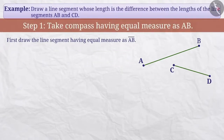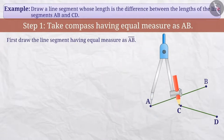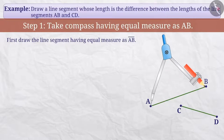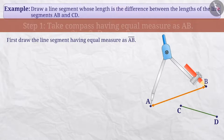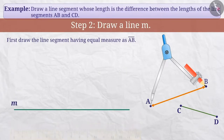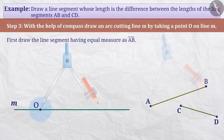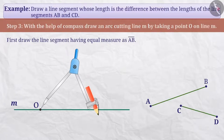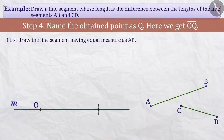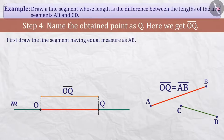Step 1: We will place the pointed end of the compass on point A and opening the compass, place the pencil on point B — that is, we will take the measure equal to line segment AB on the ends of the compass. Step 2: Then we will draw a line and name it M. Step 3: On line M, we will take a point named O. Placing the pointed end of the compass on this point and without changing the measure of the compass, we will draw an arc cutting M. Step 4: The point at which the arc intersects line M will be named Q. Here we get line segment OQ, the length of which is equal to the given line segment AB.